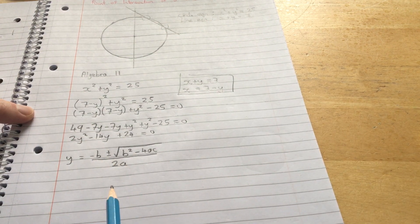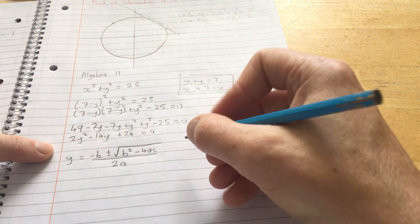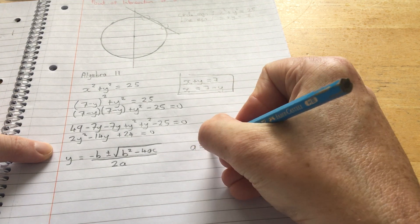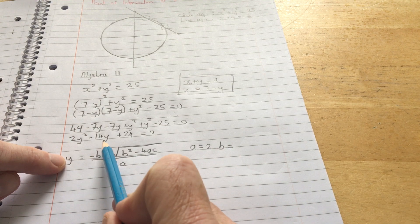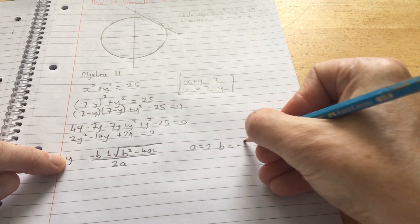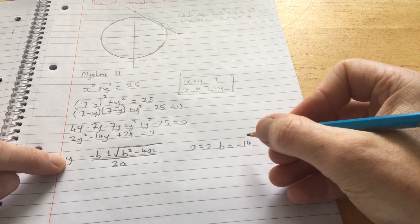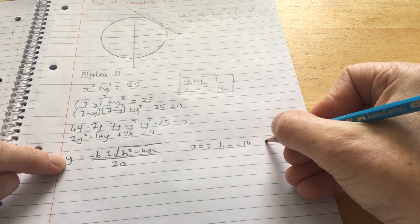Where are a, b, and c coming from? a is the number in front of y squared. So a is 2. b is the number in front of the y term. So that's minus 14. And c is this number term. So c is 24.